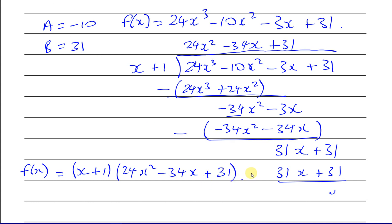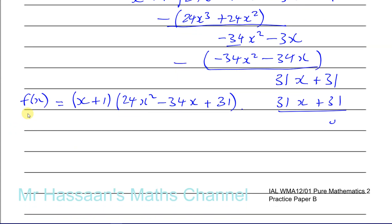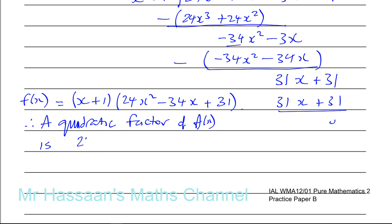So f(x) = (x + 1)(24x² − 34x + 31). Therefore a quadratic factor of f(x) is 24x² − 34x + 31.